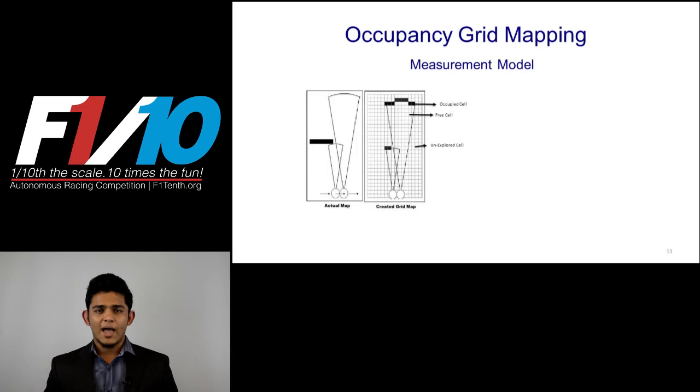The map we built here is an occupancy grid. As you can see in the image, the occupancy grid is nothing but a standard grid, where value of each cell indicates if it is an occupied cell, free cell or unexplored cell.